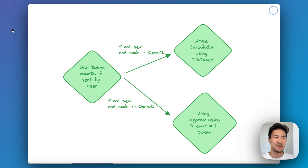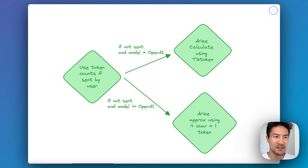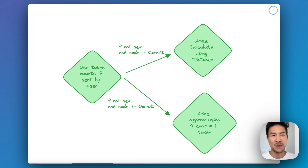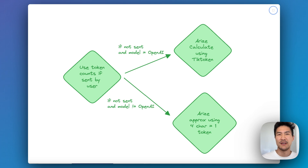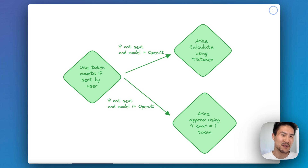Let's talk about how this works. When you send traces to Arise, we calculate token counts in three ways. The first is we look for the token count parameter from the model provider or framework provider. So if you're using LangChain or LlamaIndex and they provide the token count, or if the OpenAI completion call provides the token count, we just use that verbatim.